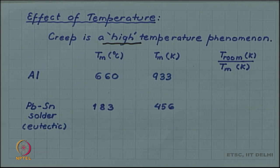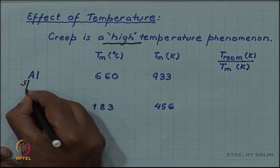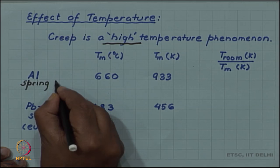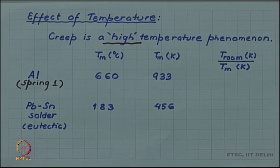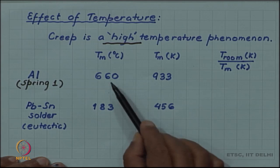One of the springs was made of aluminum. The spring which did not deform, the spring 1 non-deforming spring, was made of aluminum and its melting point is 660 degrees Celsius which converts to 933 Kelvin.